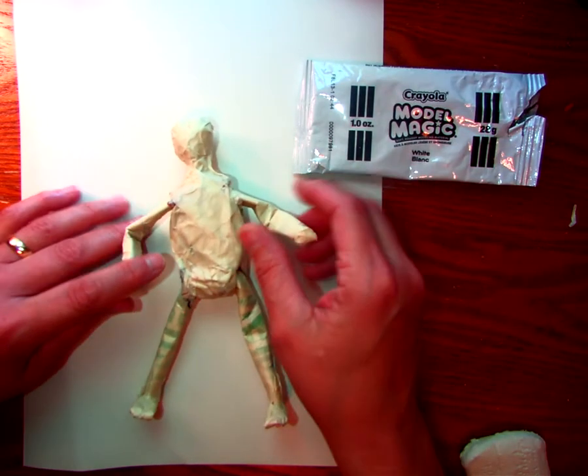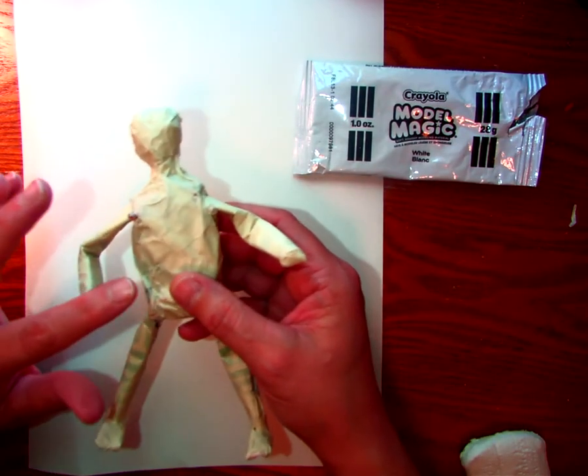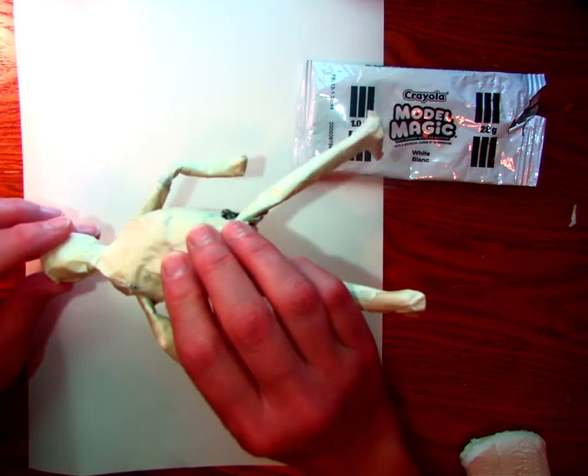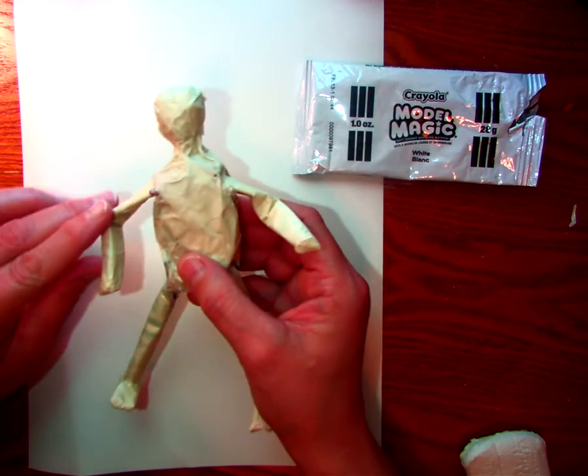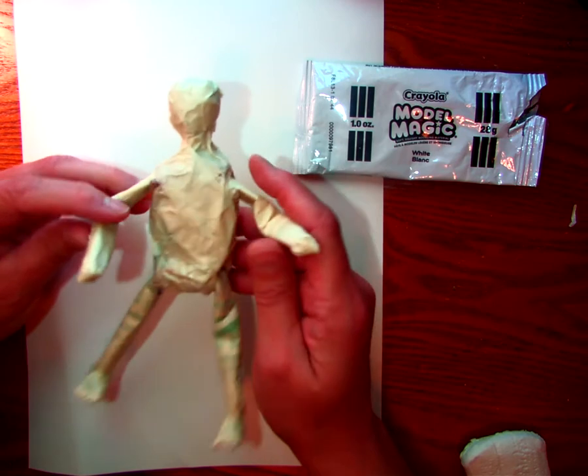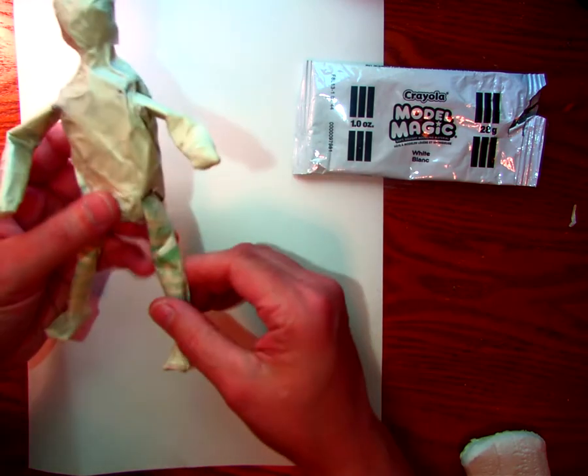We've talked before about creating an armature using newspaper and tape and we've talked about how to put a pipe cleaner in it so that you can bend the arms and legs if you wanted to.